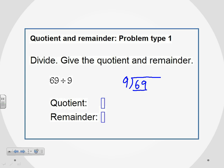Now, 9 does go into 69. 9 goes into 69 seven times because 7 times 9 is 63.